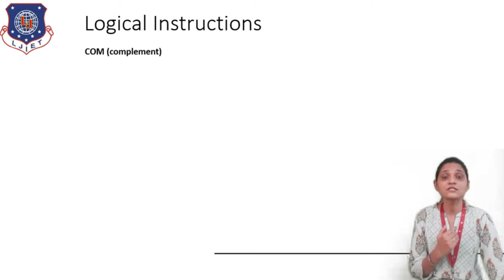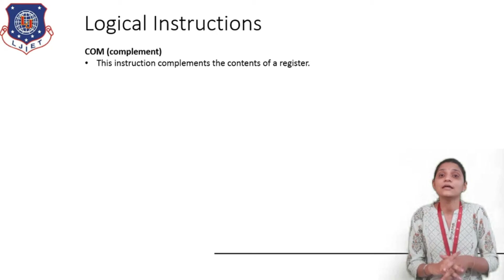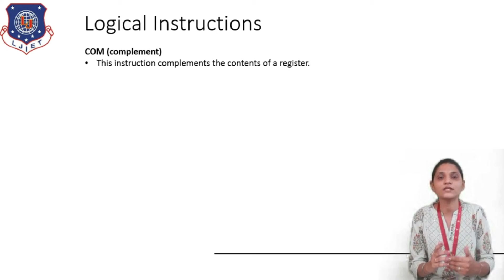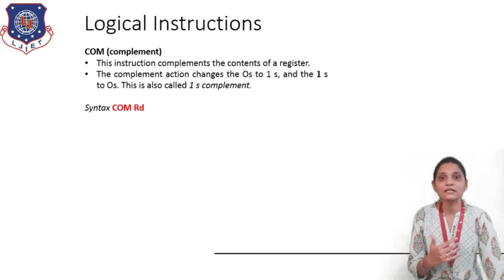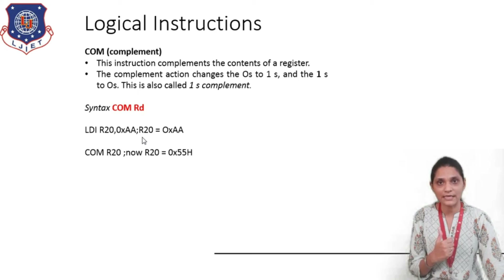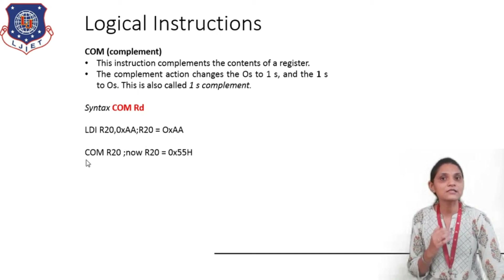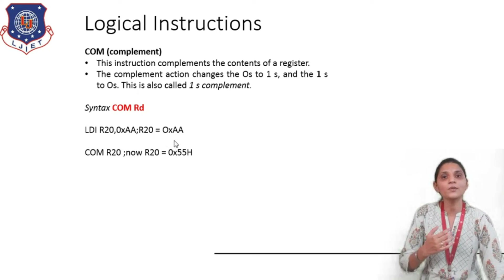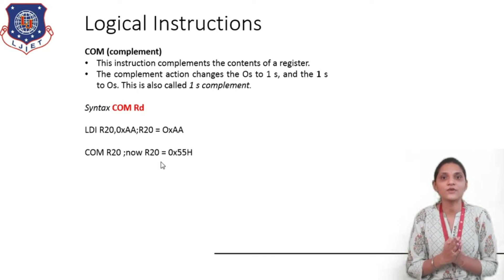Next are the complement and negative instructions. The COM instruction performs the 1's complement — whatever bit pattern is stored inside the register, its content is complemented: wherever there is a 1 it is replaced by 0 and wherever there is 0 it is replaced by 1. The syntax is COM Rd, where Rd is the destination register whose content you want to complement. For example, LDI R20, 0xAA stores AA in R20, and then COM R20 complements the content of R20. Complementing AA gives 55, so the content of R20 will be 55.